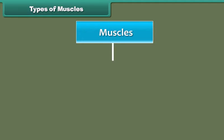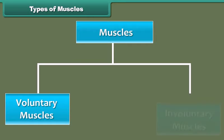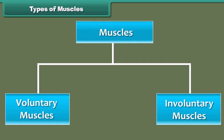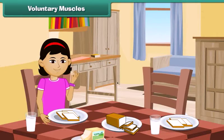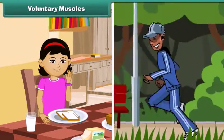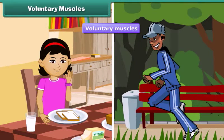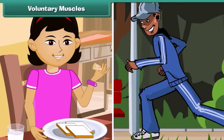According to the nature of their functions, muscles are of two types: voluntary muscles and involuntary muscles. Some actions are performed whenever we wish, like eating, walking, etc. We can start or stop these actions whenever we want. Muscles that carry out these actions according to our wishes or volition are called voluntary muscles. Movements brought about by voluntary muscles are called voluntary movements. Our arms and legs contain voluntary muscles.